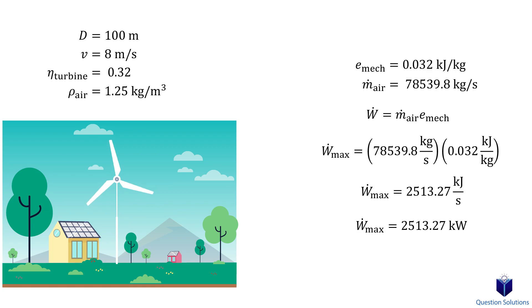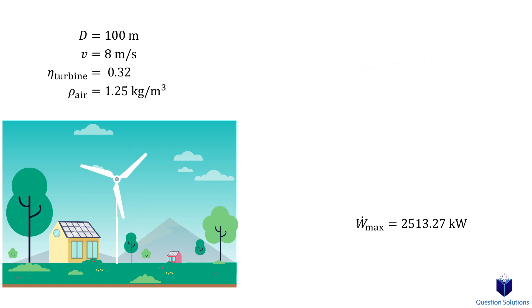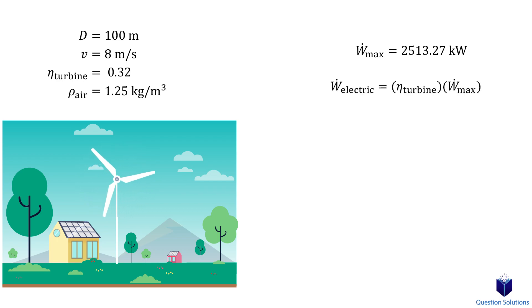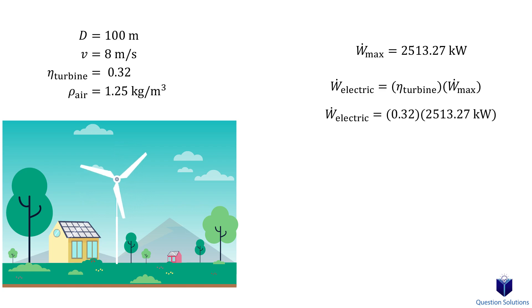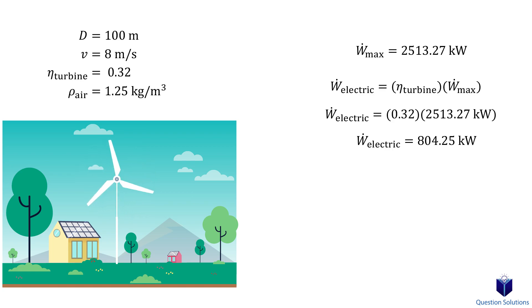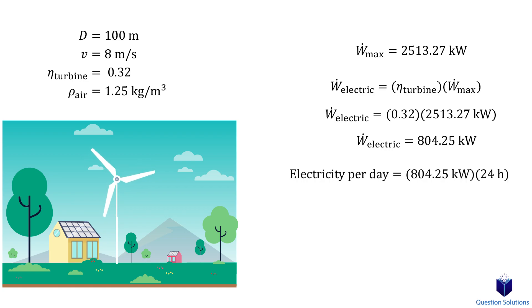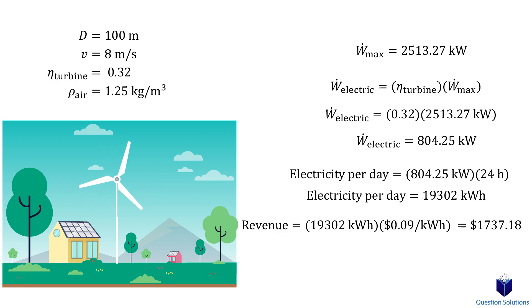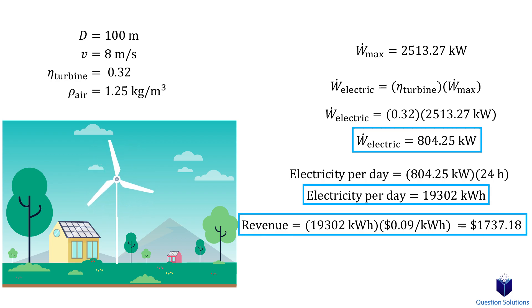Plugging values into the work equation and noting that kilojoules per second equals kilowatts, we get the maximum possible work — the maximum electricity producible with no friction. Since the turbine efficiency is only 32%, we multiply the maximum power by 0.32 to get the actual electric power generation: 804.25 kilowatts. To find electricity generated per day, we multiply by 24 hours, and multiplying by 9 cents per kilowatt-hour gives the total daily revenue — showing you can make good money with a wind turbine.